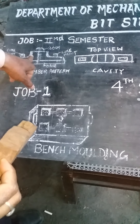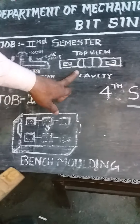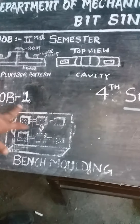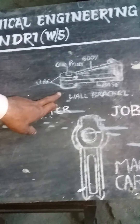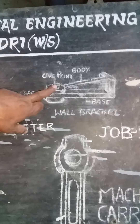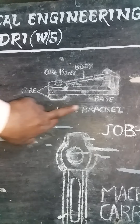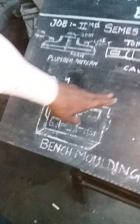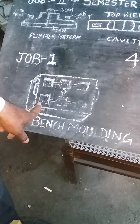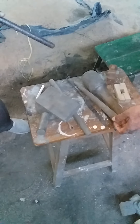The figure for job one is shown here. This is the body, this is the core print. The core is essential in order to make the cavity — you can see the cavity in the top view. Two jobs are made for the second semester: job one is the plumber pattern, and we are also making a valve bracket, which has a core print for making a hole and has paramount application. For the fourth semester, two jobs are there — one is called bench moulding and another is machine moulding.